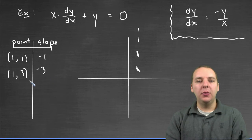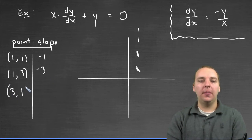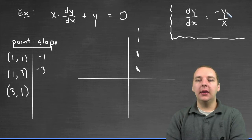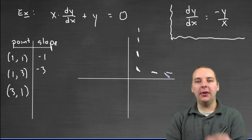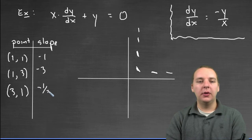Likewise, if you picked maybe like (3, 1), then you would get negative 1/3. That's a little flatter. So it looks like you get flatter as you go this way, and you get steeper as you go this way.